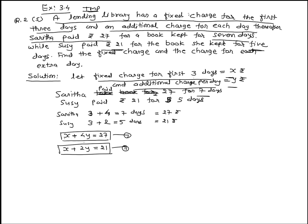Now we solve by the elimination method. X plus 4Y equals 27, X plus 2Y equals 21. Subtracting, signs change, X cancels. 4Y minus 2Y is 2Y, 27 minus 21 is 6. 2Y equal to 6, Y equal to 3.